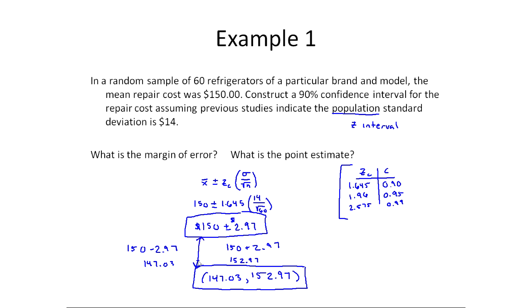What we would interpret this as is that we're 90% confident that the repair cost for all refrigerators of this brand and model would be somewhere between $147 and $153. Make sure you read carefully about how to do these interpretations since they're an important part of understanding confidence intervals. The margin of error in this particular case would be $2.97. The point estimate would be the sample value for whatever you're estimating. We're trying to estimate a population mean, so the point estimate is x-bar and that x-bar was 150.